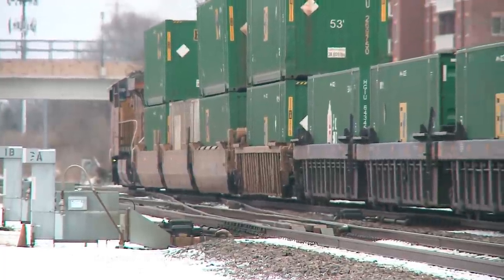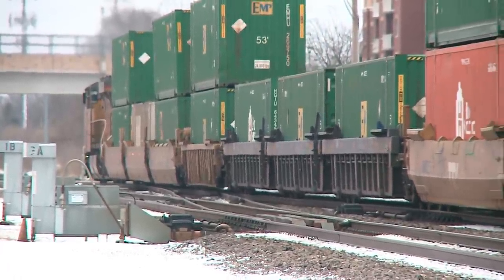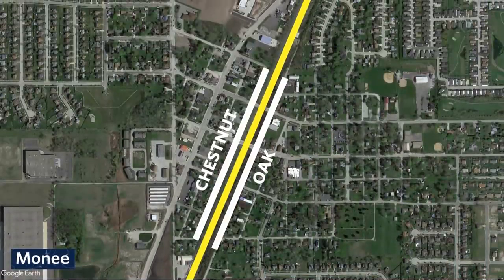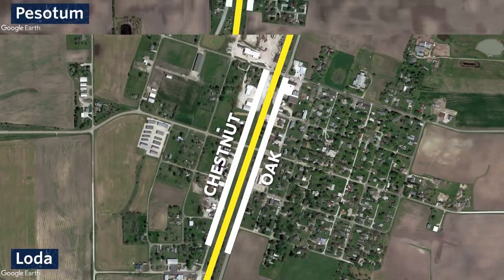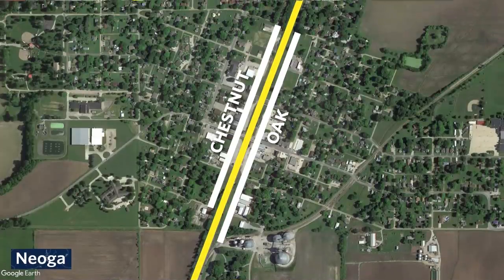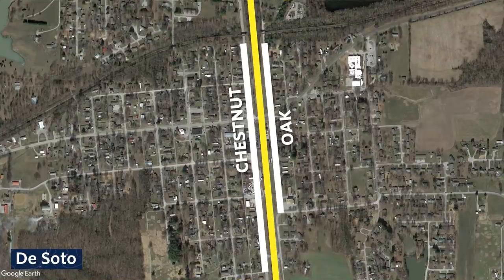Trains still run through much of the original routes, and you can see the track and depots in the small towns between Chicago and Cairo. Here you can see the track running between Oak and Chestnut Streets in Moni, a village on the edge of the Chicago suburbs. And the track running between Oak and Chestnut in Loda, Pesodum, Nyoga, Farina, Richview, and DeSoto.